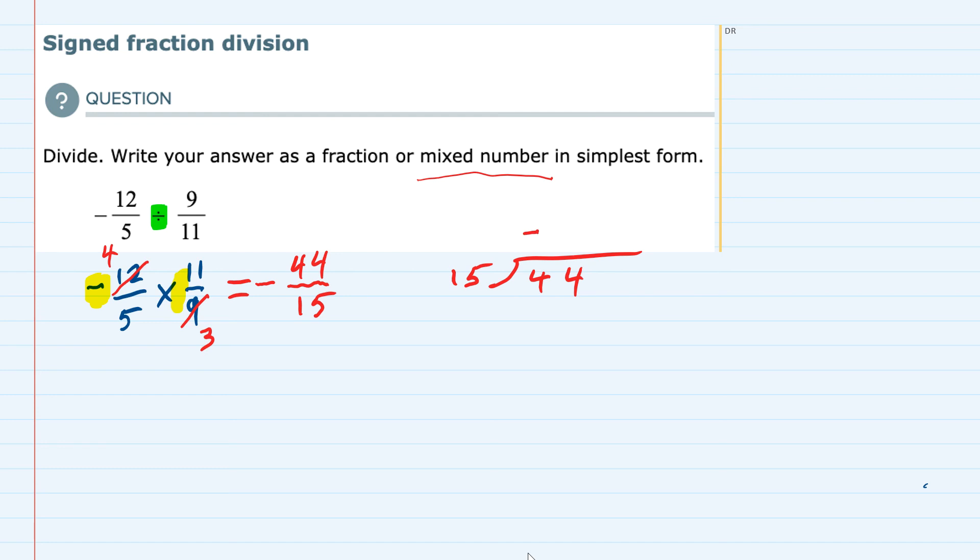Because it was negative 44 over 15. 15 goes into 44 twice. 2 times 15 is 30, and we're left with a remainder of 14.